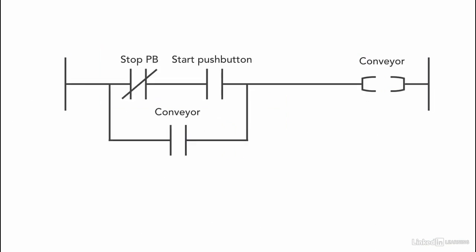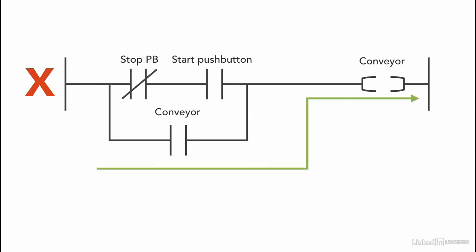Note that the XIO instruction cannot be included inside the CLN instruction branch, because this will keep the conveyor on even if the stop is pressed, since it's part of the CLN instruction. In that case, if the stop push button is pressed, the conveyor will stay on.